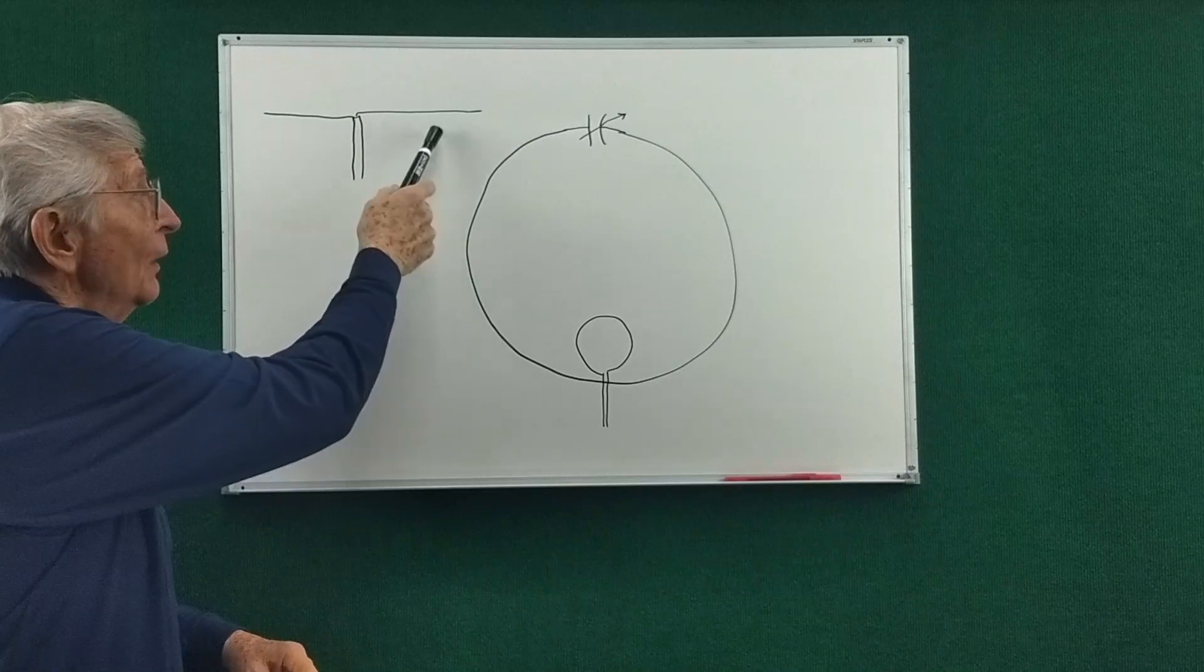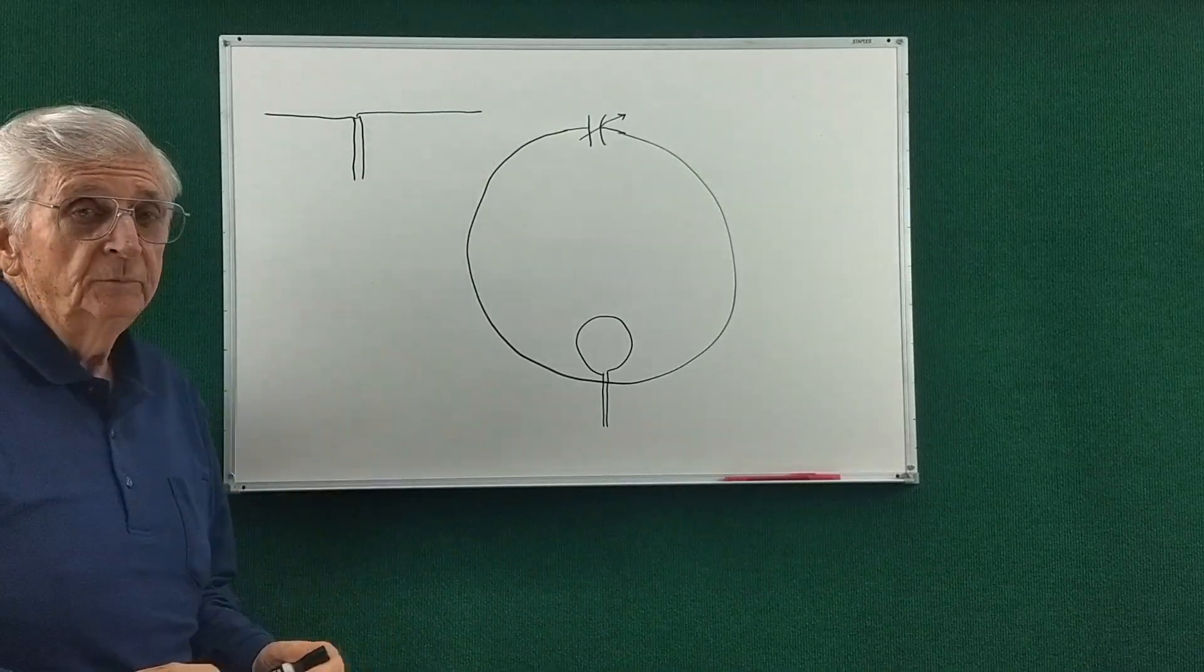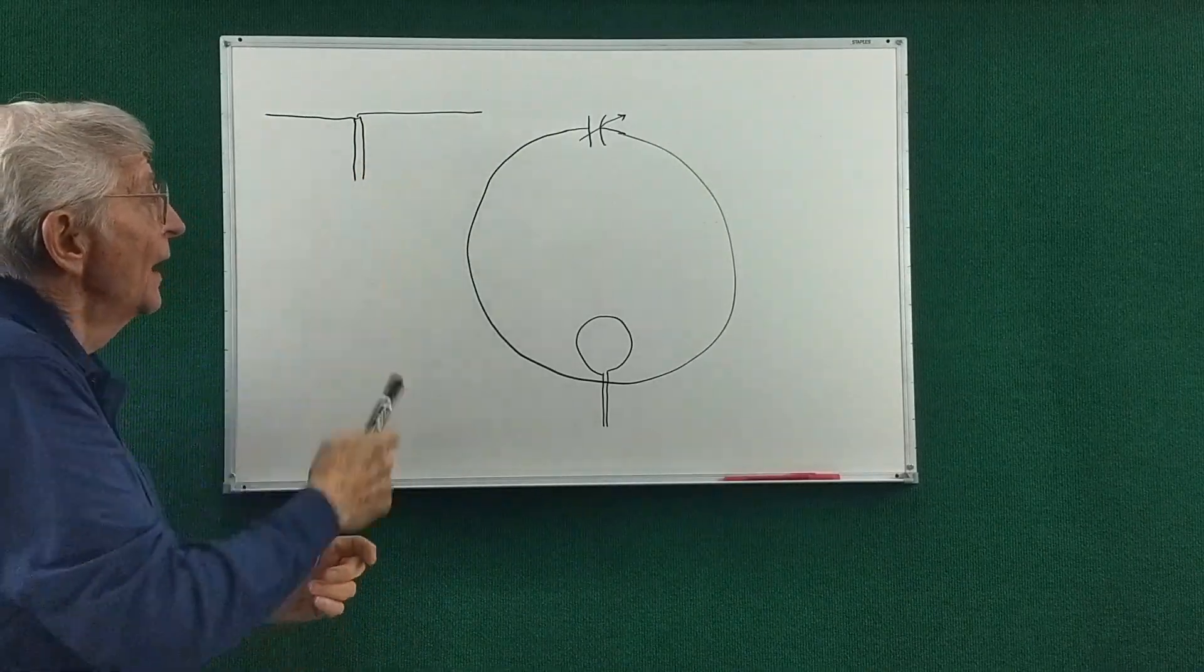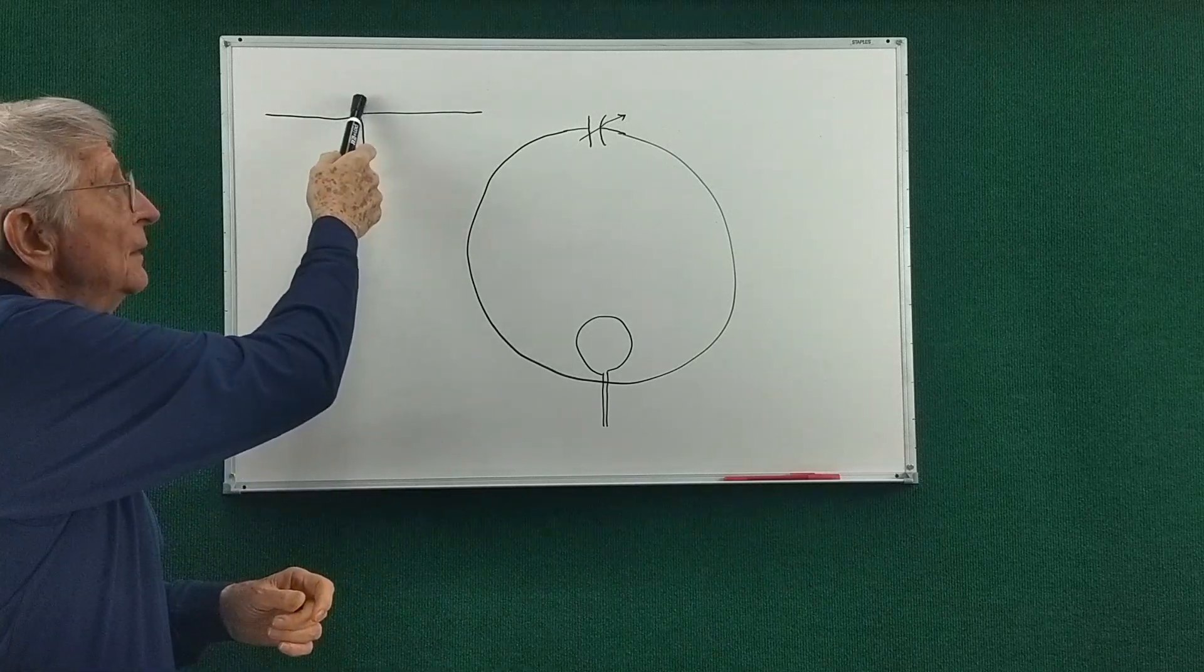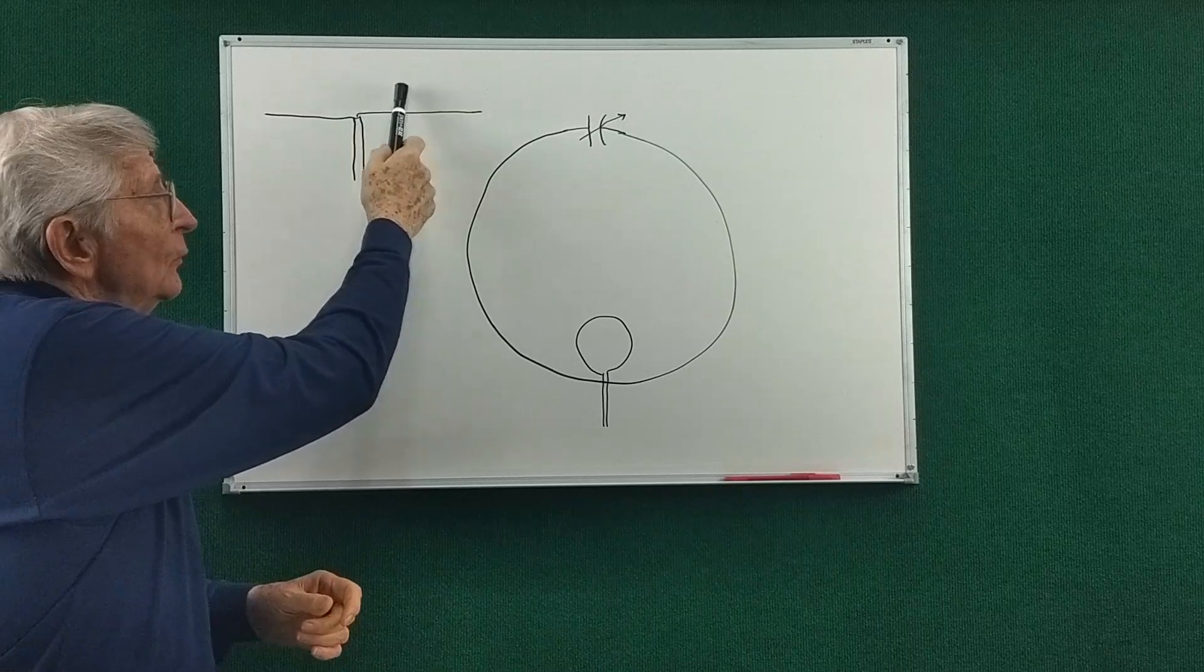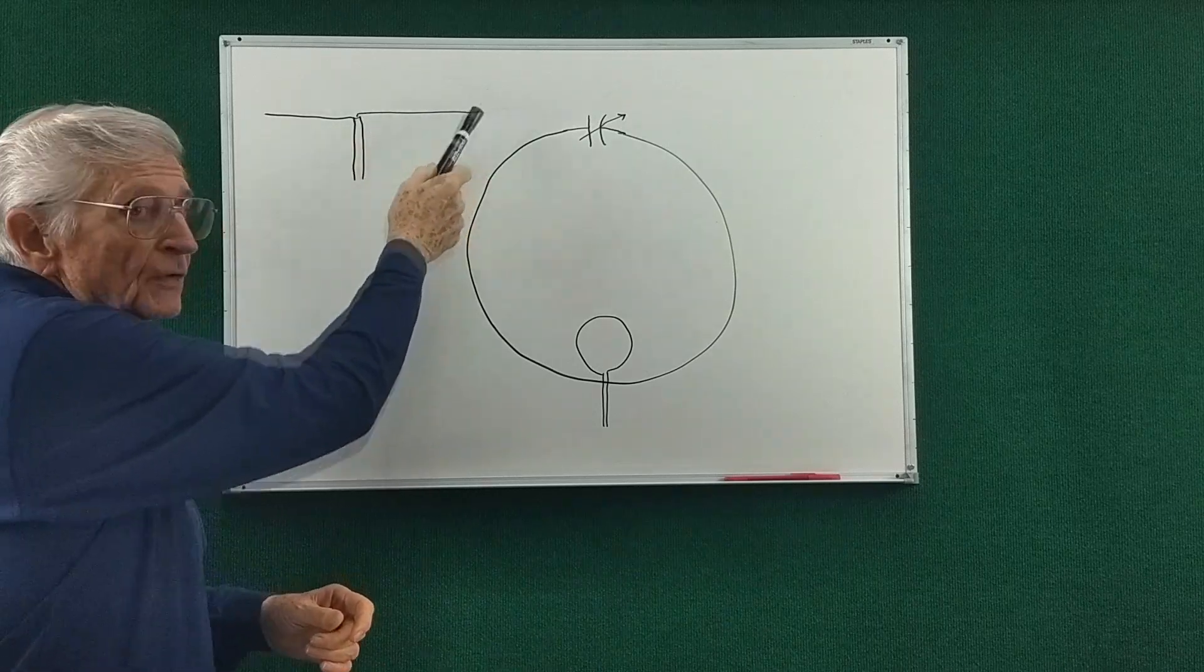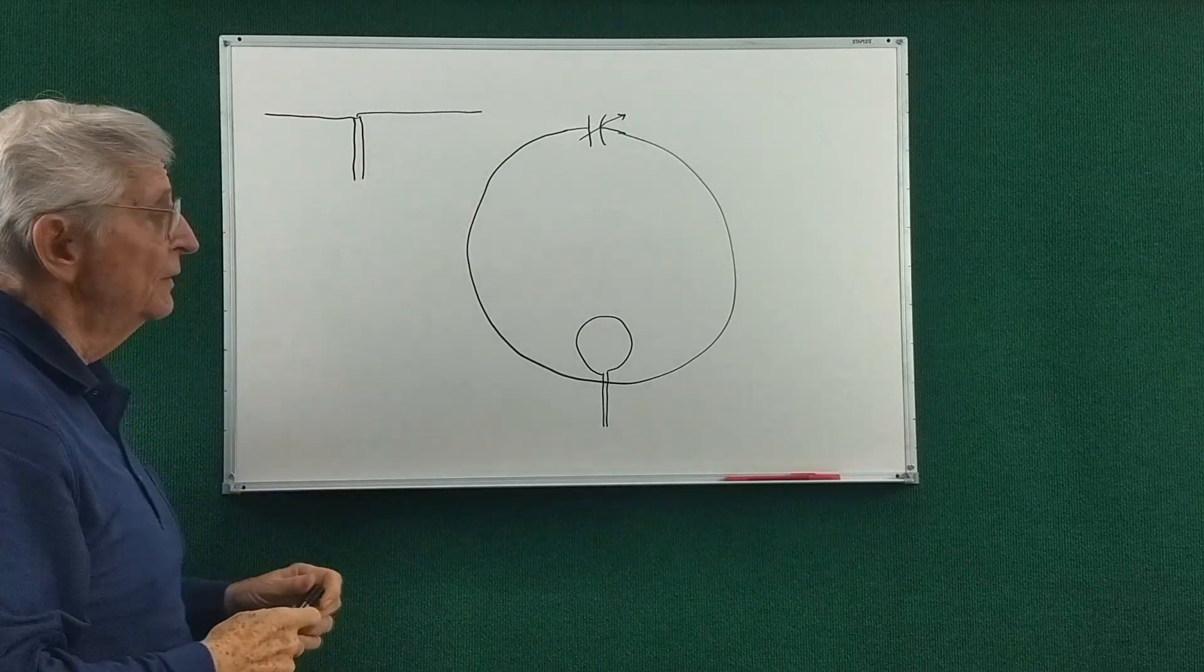It's pretty well known that for a standard dipole antenna, the current is highest near the feed point and is reduced to zero as we go out towards the end of the antenna.